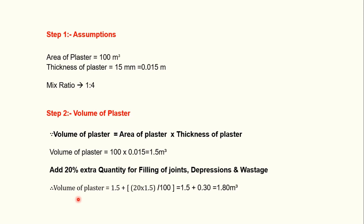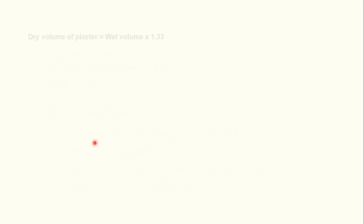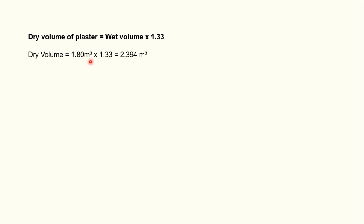To get the dry volume, we multiply the wet volume by 1.33. Here 1.33 is the multiplication factor; you can take any value from 1.30 to 1.35. Therefore dry volume equals 1.80 (wet volume) multiplied by 1.33, which gives 2.394 cubic meters.